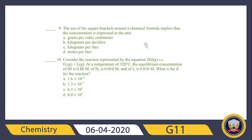Question ten: consider the decomposition of HI into hydrogen and iodine. At 520 degrees, the equilibrium concentrations are: HI = 0.80 M, H₂ = 0.010 M, and I₂ = 0.010 M. What is K for the reaction? K equals concentration of products over concentration of reactants, with each concentration raised to the power of its coefficient from the balanced equation. This calculation is homework for you.